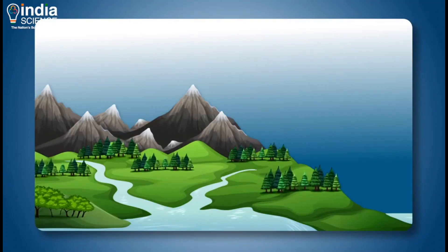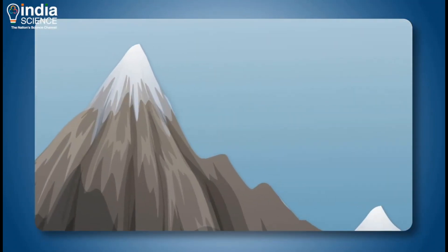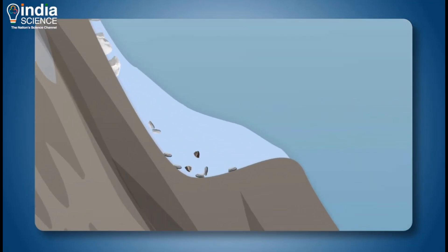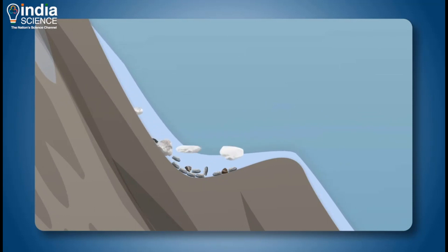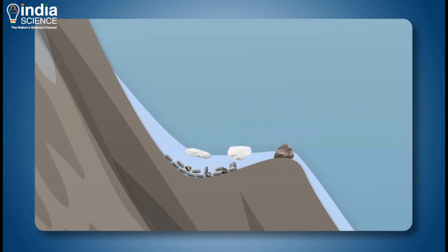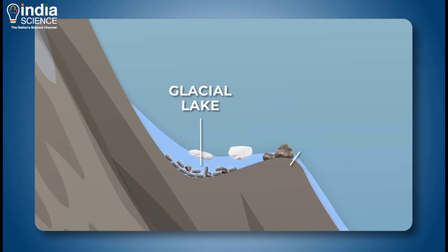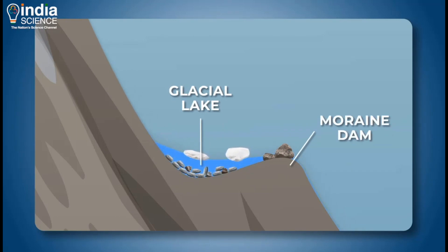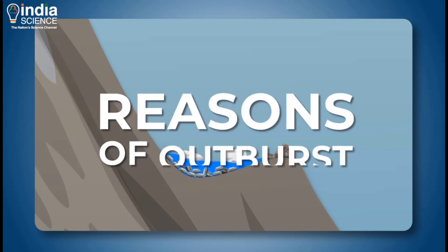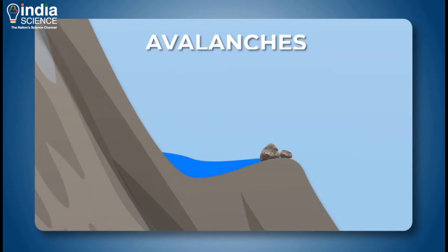Let's explore the mechanism of a GLOF in more detail. As glaciers retreat, they leave behind moraines — accumulations of boulders, stones, or other debris in the valley. This leads to the formation of moraine-dammed lakes. Such moraines often contain a melting ice core built from transported rock debris.